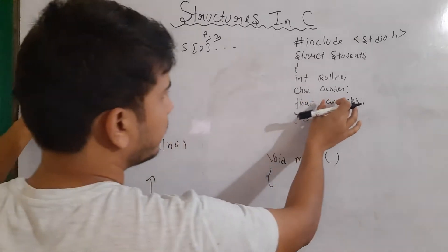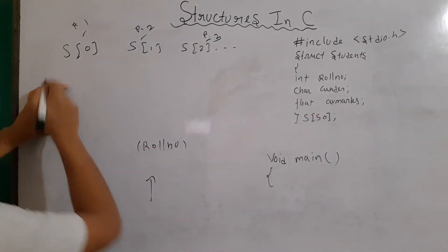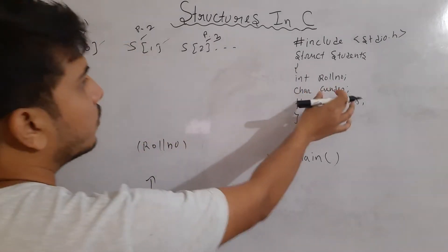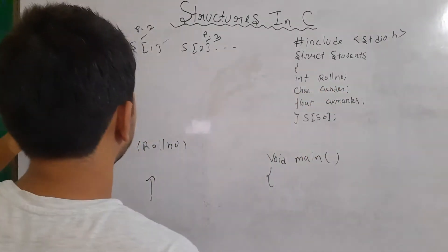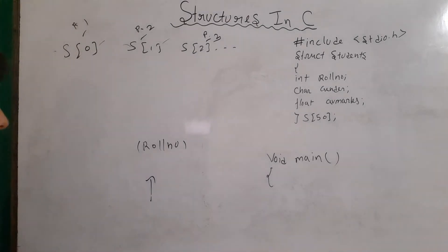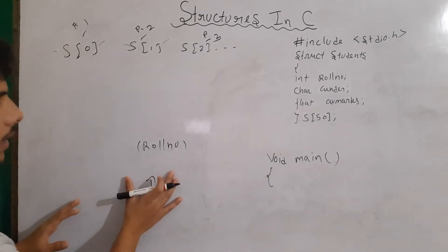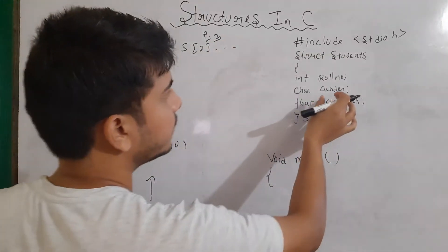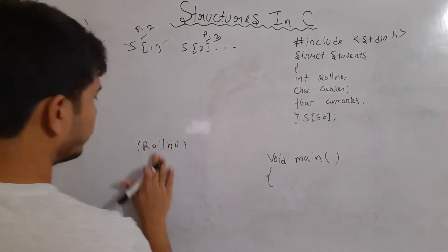Now, what are the information? Role number, gender and average marks. So, each student is holding the information as role number, gender and average marks. Then later on, we need to make a function in which somebody will send us the role number and based on their role number, we will be fetching its other information that is gender and average marks.